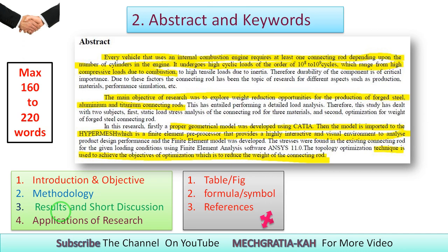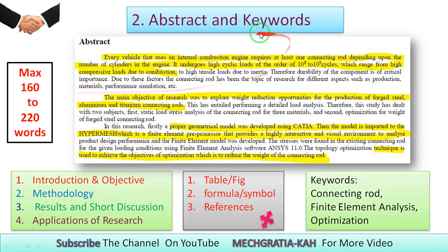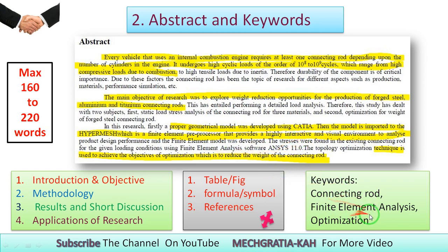The purpose of the abstract is that readers can understand the core work without reading the full paper. Keywords are very important — for example, keywords like 'Connecting Rod,' 'Finite Element Analysis,' and 'Optimization.' If someone wants to search for your paper on Google using these words, and you have included these keywords, your research paper will be found and it will increase your citation score.